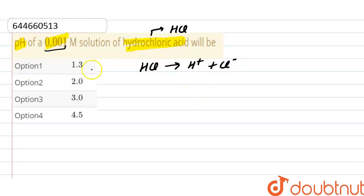So the concentration of H+ ion here will be 0.001, or we can write it as 10 raised to the power minus 3 molar. And we have to find out the pH. pH is equal to minus log of H+ ion.